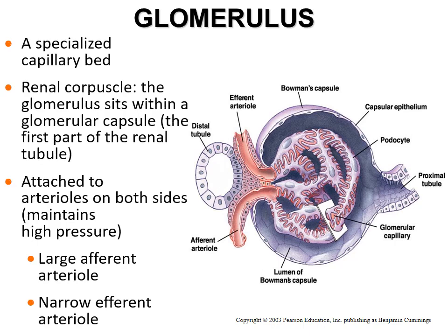The glomerulus is a specialized capillary bed within the renal corpuscle. The afferent arteriole brings blood into the glomerular capillaries, and the efferent arteriole takes blood out. The distal convoluted tubule passes in close proximity between the afferent and efferent arterioles, which has physiological significance discussed later.